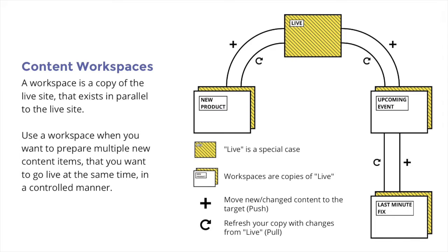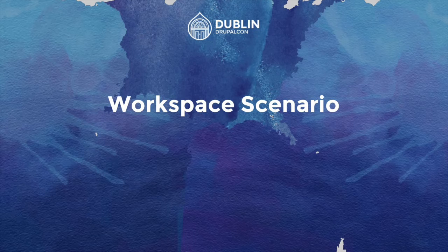Down the bottom we've got a 'last minute fix' — you can branch off a branch and create fixes and push those up as well. The two lines represent a push and a pull. The push will push just your changes, and the pull will pull any upstream changes down. So on the last minute fix you get changes from 'upcoming event,' and on 'upcoming event' you get changes from live.